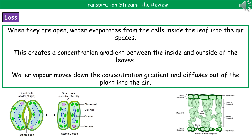When the stomata are open, water evaporates from the cells inside the leaf into the air spaces, creating a concentration gradient between the inside and outside of the leaves. Water vapour moves down the concentration gradient and therefore diffuses out of the plant and into the air.